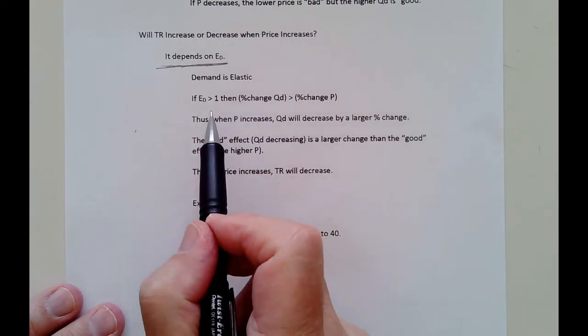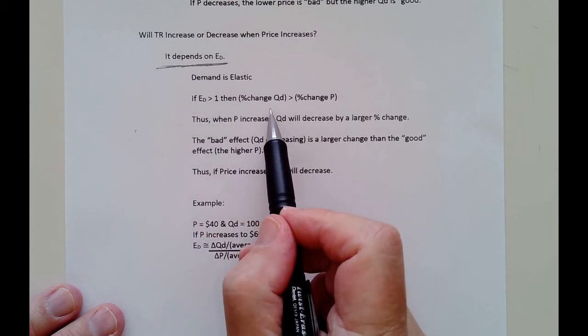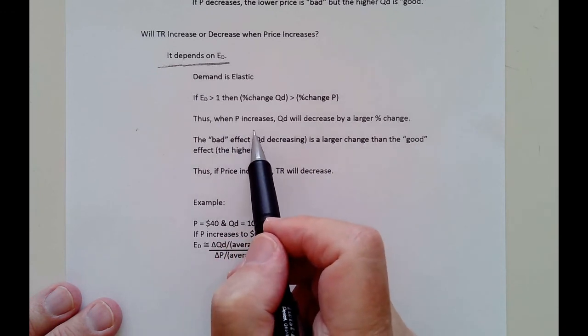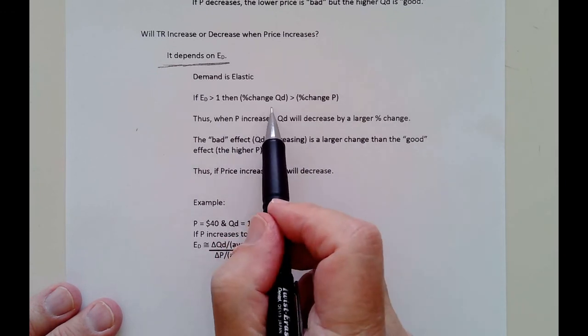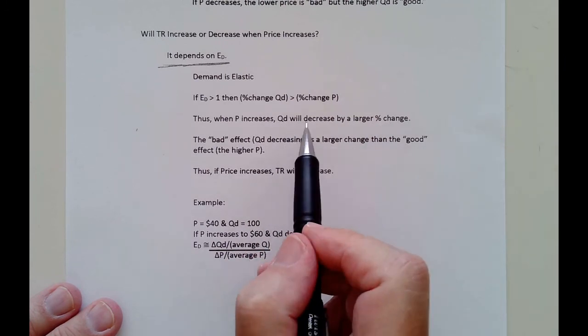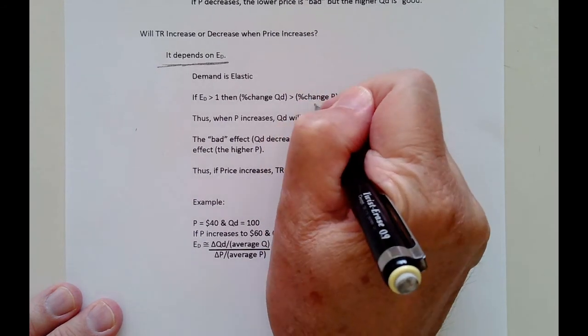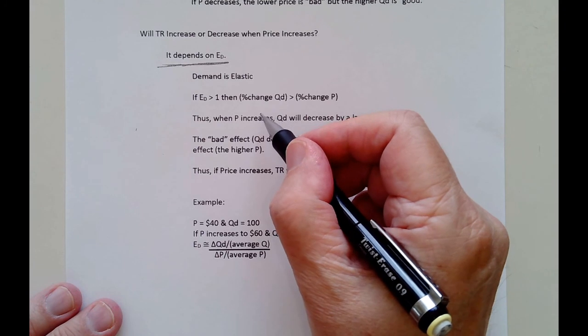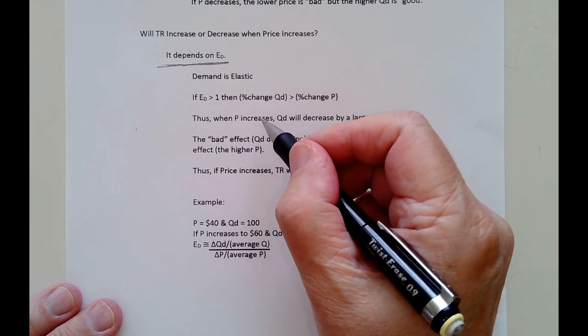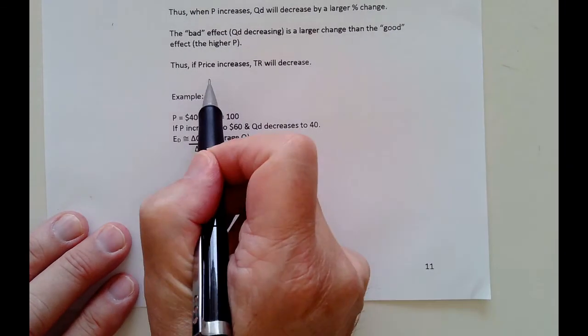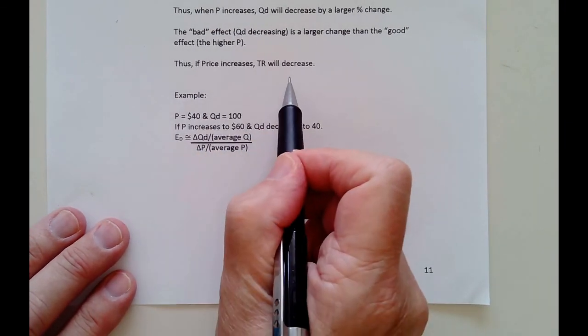So let's look at the case where demand is elastic. Elastic means the coefficient is greater than one, which means the percent change in the quantity demanded is going to be greater than the percent change in price. So now if you raise your price, you will sell less. But because the quantity demanded is greater, you're going to sell less by a larger amount than the increase in price. So the good effect of a higher price, this would be a good effect here if your price goes up, is going to be outweighed by the bad effect of selling less. What's going to happen is that you raise your price, you will get more money for everyone that you sell, but you can sell a lot less because you're going to lose a lot of customers. Because why? Your demand is elastic.